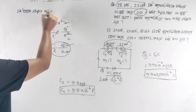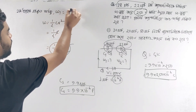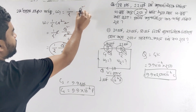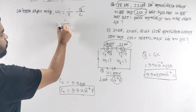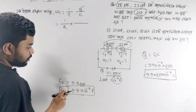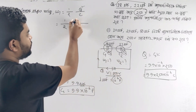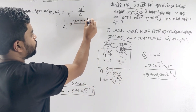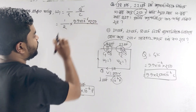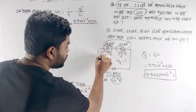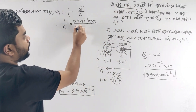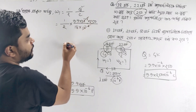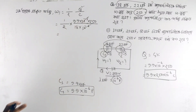So, first of all, W1 is equal to q² divided by 2C. If we apply this, 1/2 of q² by C gives us 1/2 of q² by C. So the capacitance is 18 microfarad — 18 into 10 to the inverse 6.